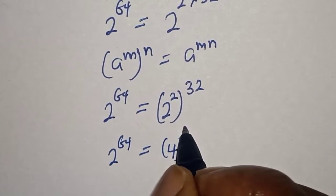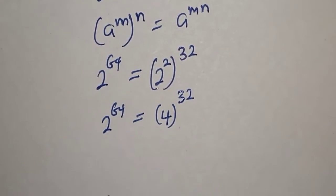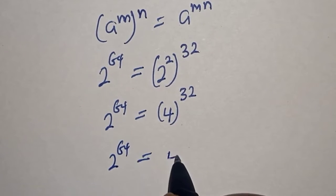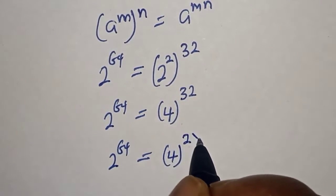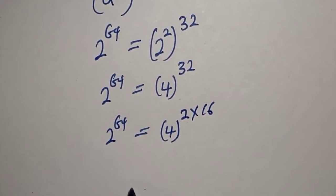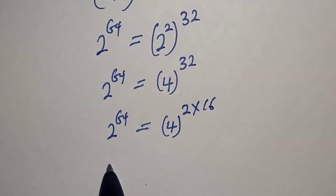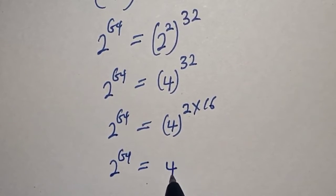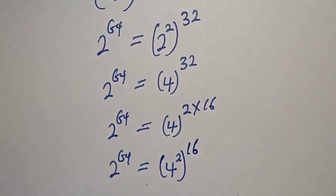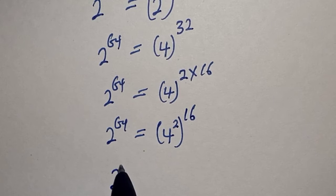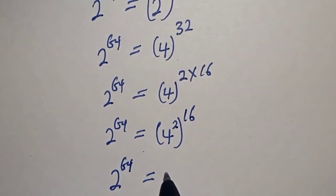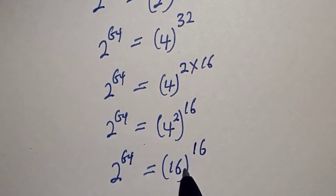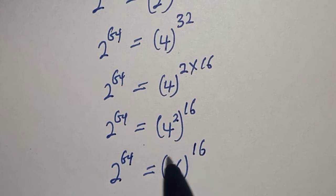That is, 2 raised to power 64 is equal to 4 raised to power 32. Also, 2 raised to power 64 is equal to 4 raised to power 2 times 16. From the same rule, 4 squared is 16, so 2 raised to power 64 is equal to 16 to the power of 16.